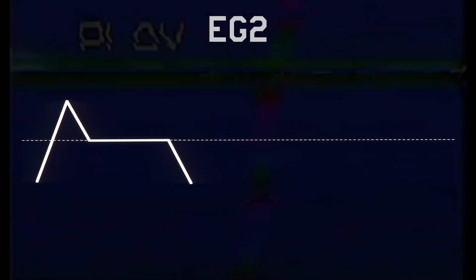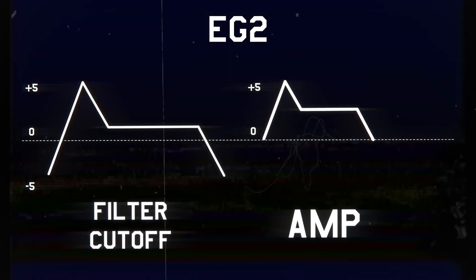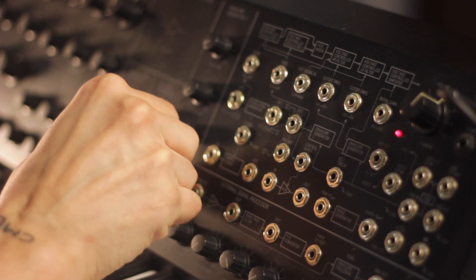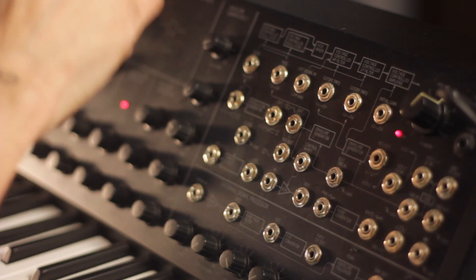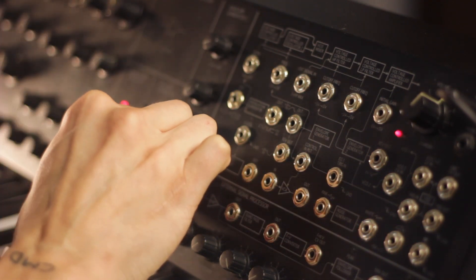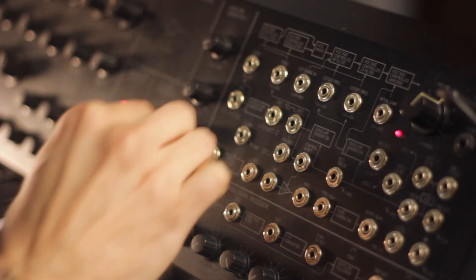I'm so used to working with two envelope generators where you can set them differently and hear the difference in the cutoff frequency. I didn't realize that the voltage being received by the cutoff frequencies is negative five volts to plus five volts, whereas the amp is getting zero volts to five volts. If you move the sustain level down, the effect of the cutoff frequency becomes more audible. You can still get a really snappy envelope cutoff filter sound using just one envelope generator, because the signal going to the amp is different than the one going to the cutoff frequency.